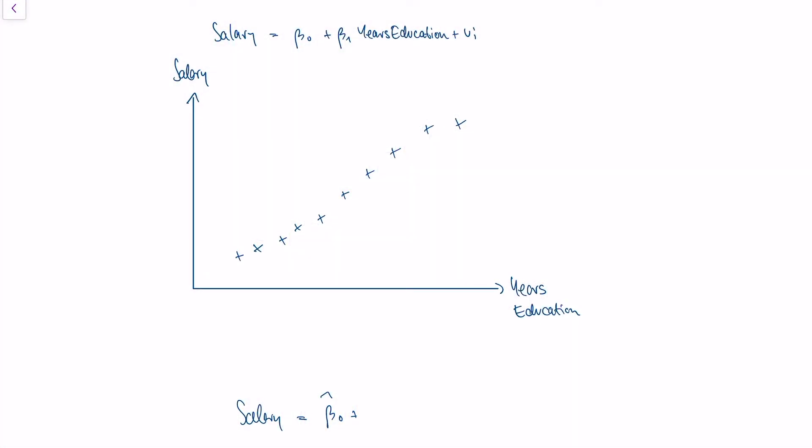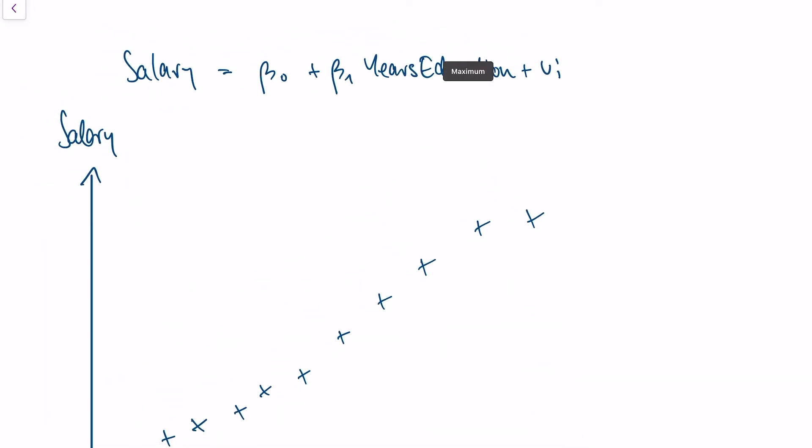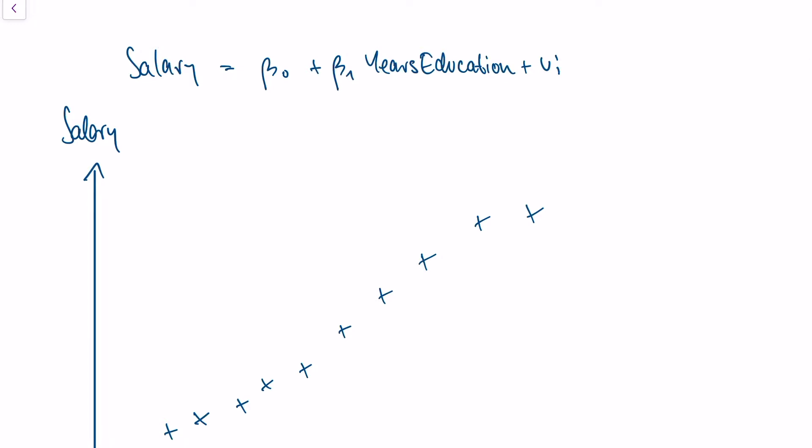So today we're talking about bias in ordinary least squares regression, and I have a very simple example here. Let's say we're trying to understand how big a person's salary is dependent on the years of education.